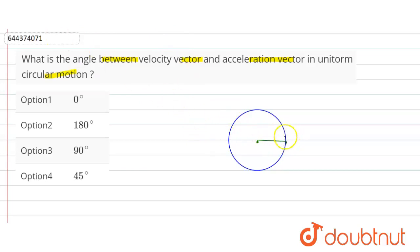So here the particle is moving in uniform circular motion. So velocity, we know, this will be the velocity of particle. And we know in circular motion, acceleration, centripetal acceleration, is always towards the center.